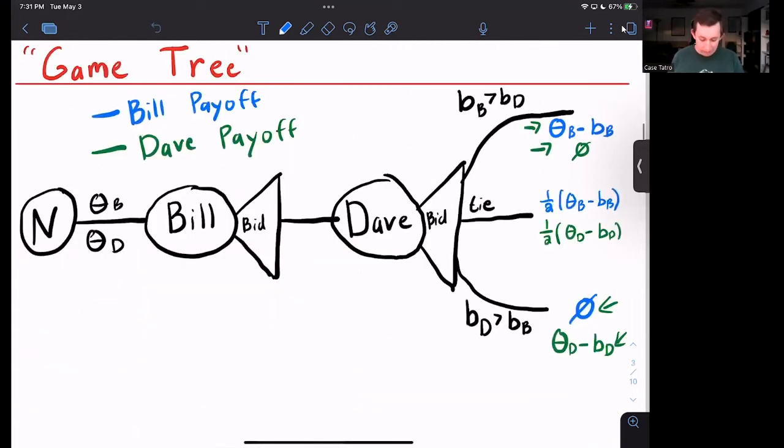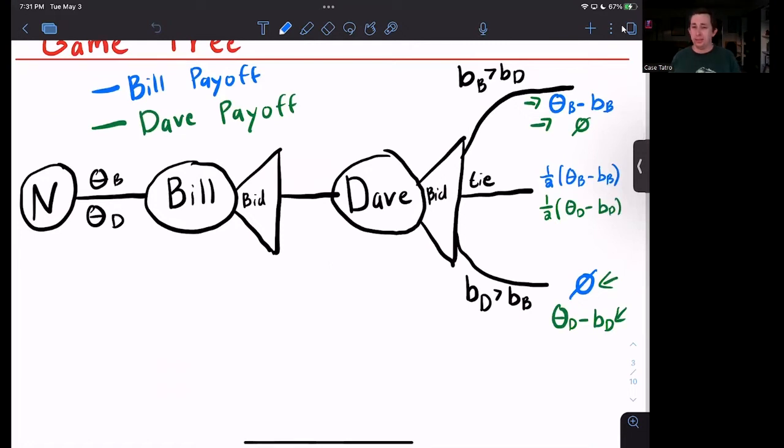What about the utility of getting the art? We're going to say that the utility of winning is just equal to how much they value the art minus how much they bid, or how much they value it minus the cost of the art. We're going to say that if you lose the auction, then the utility is zero. You don't win anything, but there's no cost to putting that bid. So if you lose the auction, you're just going to walk away with nothing.